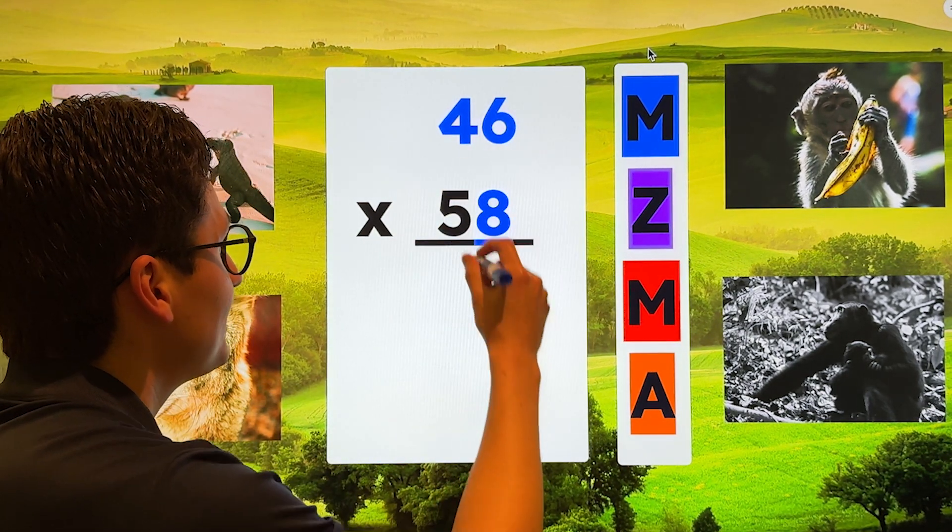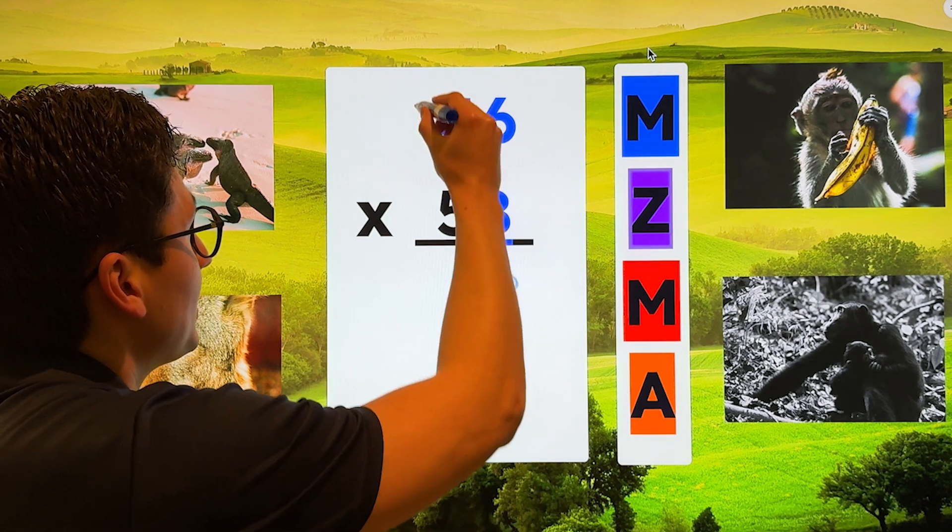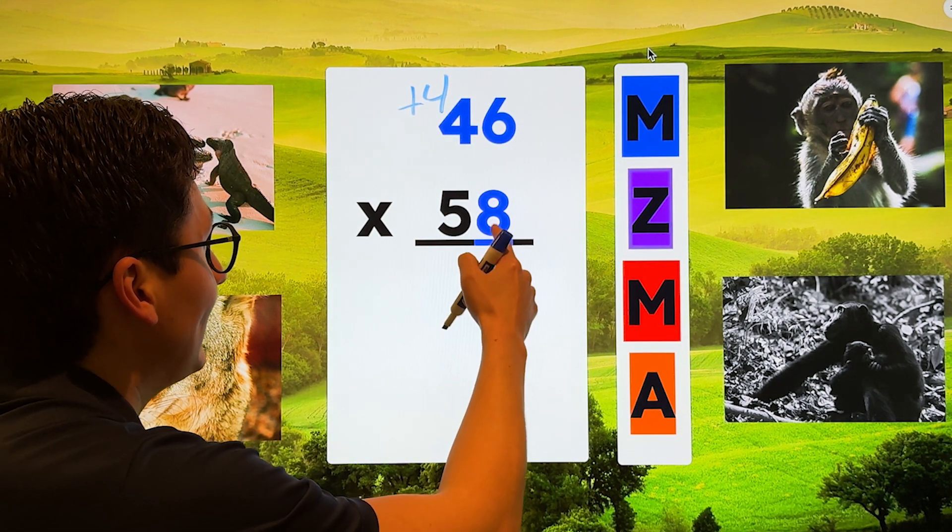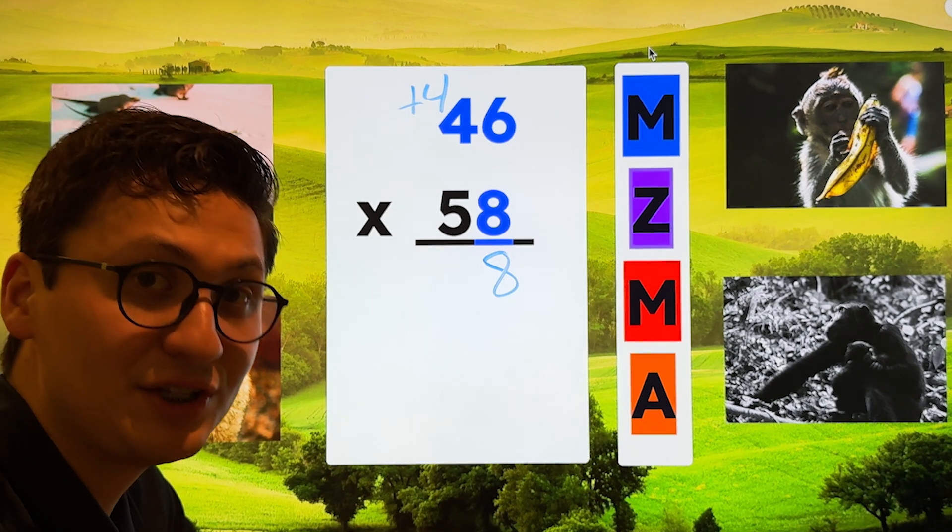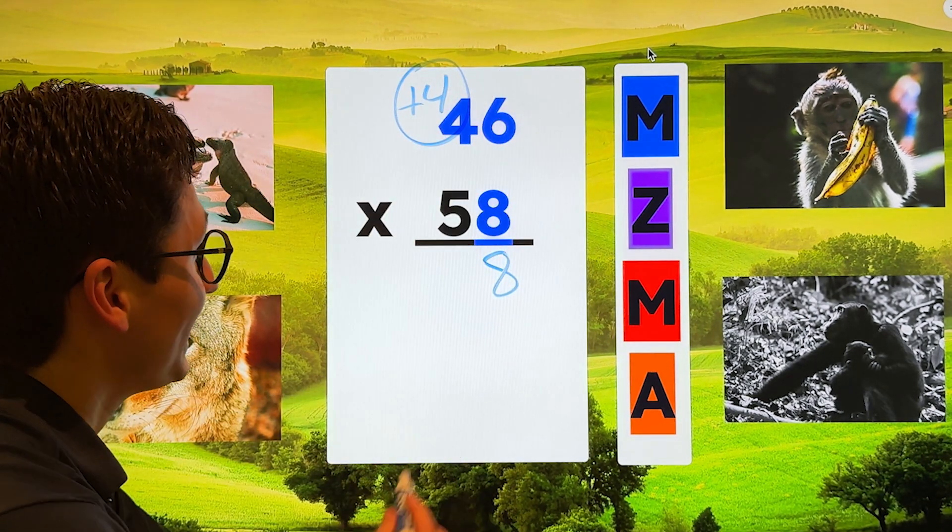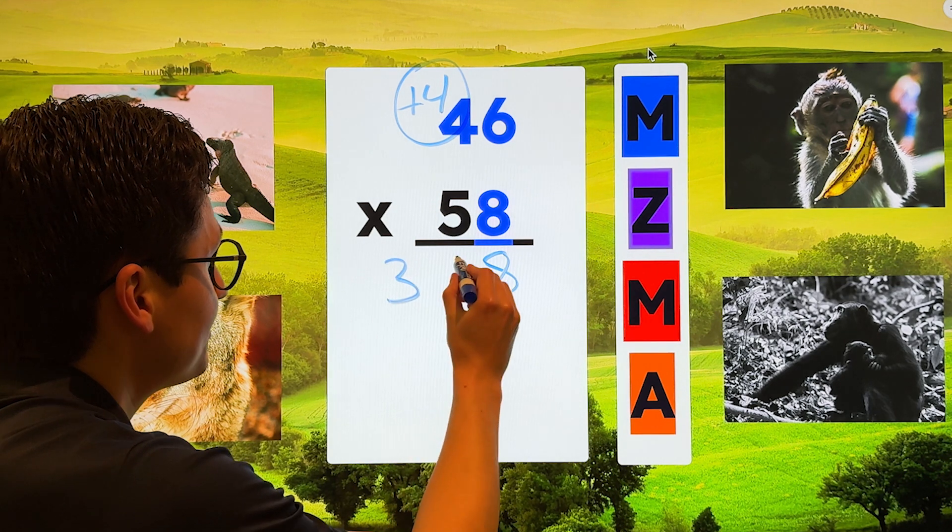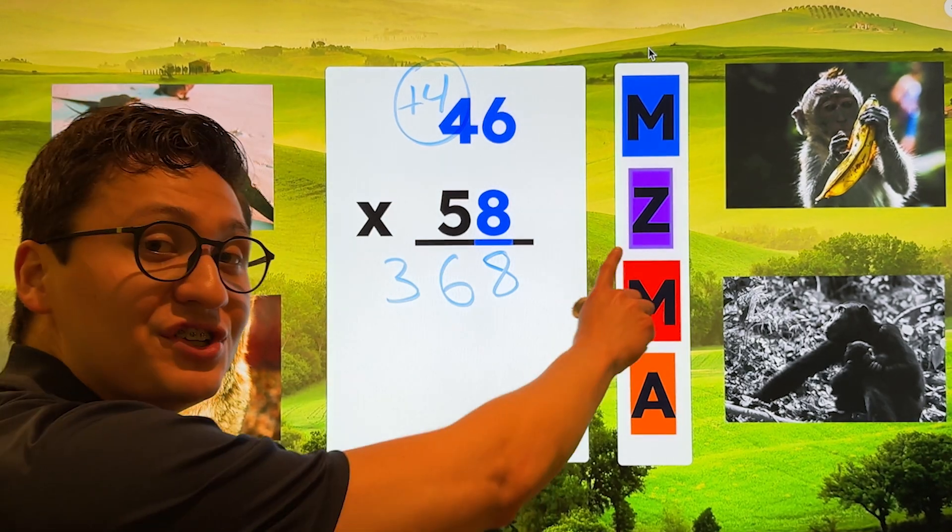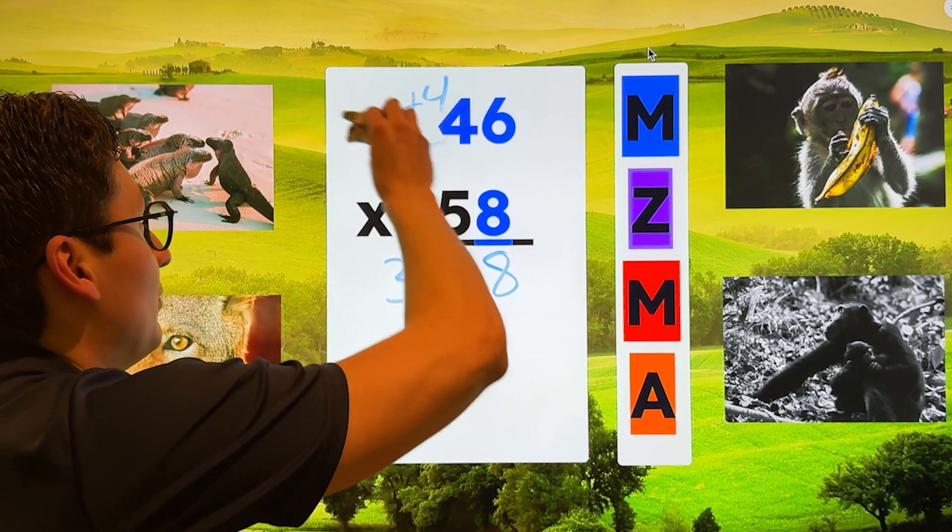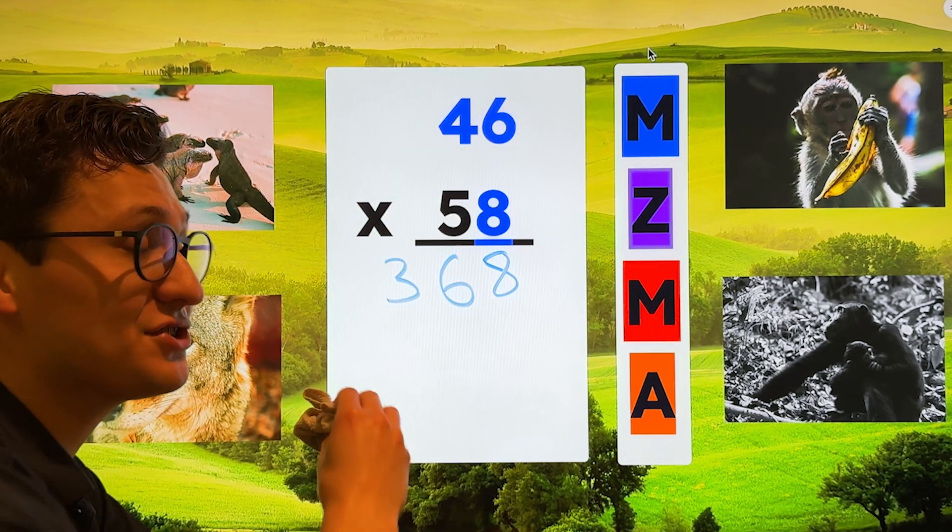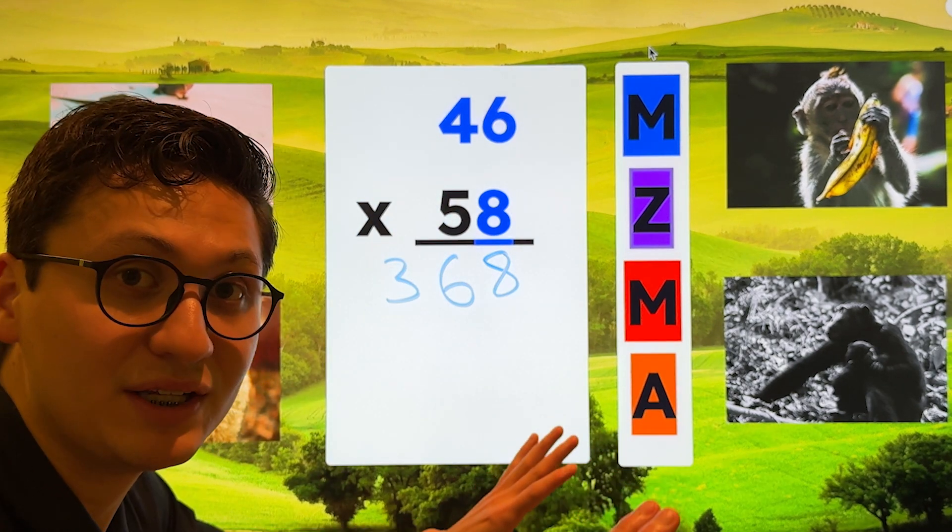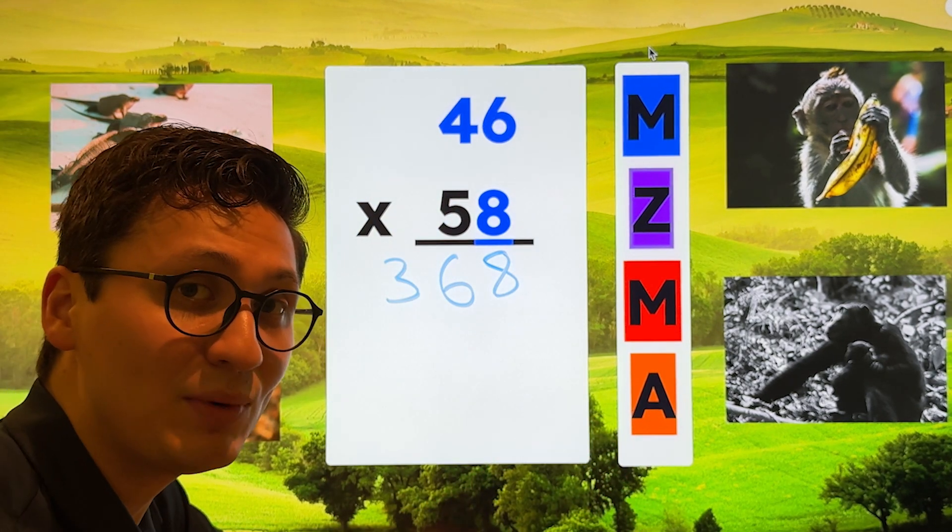Eight times six is 48. We make sure to regroup. And then eight times four is 32 plus four. Don't forget this plus four is 36. Before we go on to step two, which is to add a zero. Remember, erase this plus four. Yes, it's extremely important to regroup. But once we're done, get rid of it. We don't need it anymore.